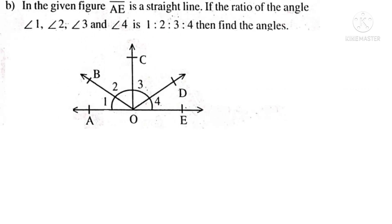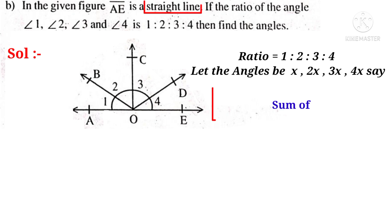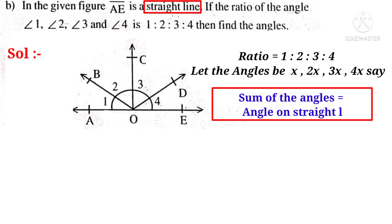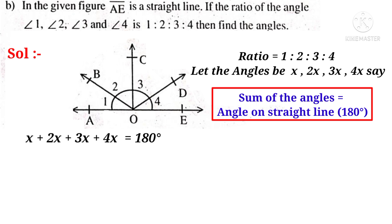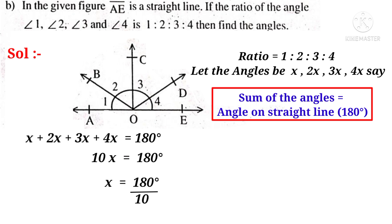Now, 13b. In the given figure, AE is a straight line. The ratio of angles 1, 2, 3, and 4 is 1:2:3:4. Find the angles. Solution: let the angles be x, 2x, 3x, and 4x. Since the angles lie on the same straight line, their sum is equal to 180 degrees. So, x plus 2x plus 3x plus 4x is equal to 180 degrees. 10x is equal to 180 degrees. So, x is equal to 180 by 10. On simplification by 10, 18 times. So, x is equal to 18 degrees.